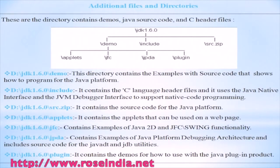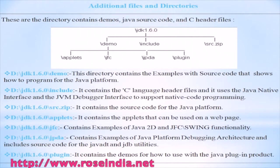Additional directories include demos, Java source code, and C header files. JDK 1.6.0\demo contains examples with source code that show how to create programs for the Java platform. JDK 1.6.0\include contains the C language header files and uses the native interface and the JVM debugger interface to support native code programming.